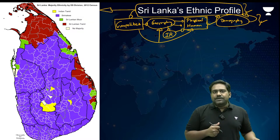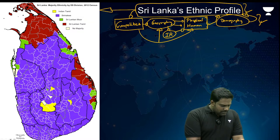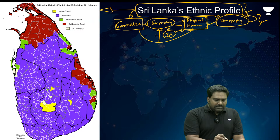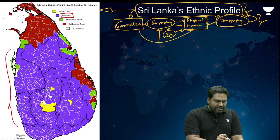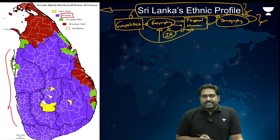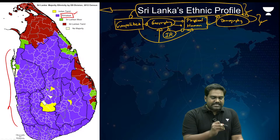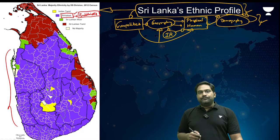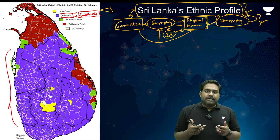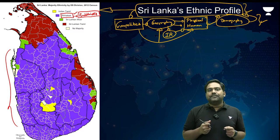Please look at the map shared here. In Sri Lanka, the majority community is the Sinhalese. The areas shaded in purple on the map show where the Sinhalese ethnic community can be found. The majority of Sinhalese are followers of Buddhism — it is the Sinhala Buddhist community which is in the majority in Sri Lanka.